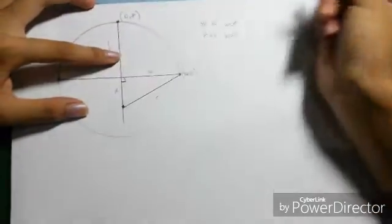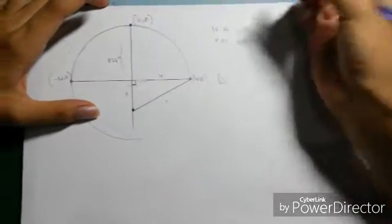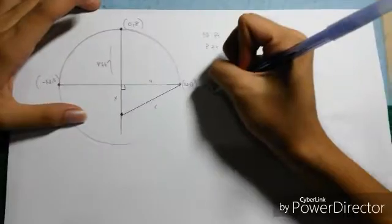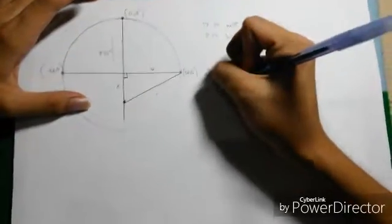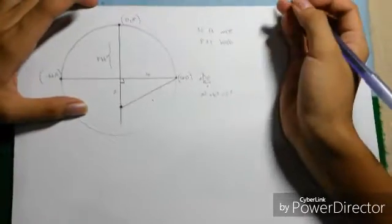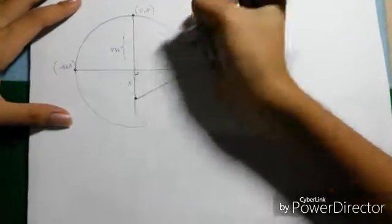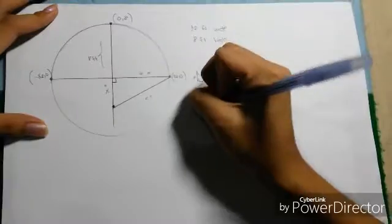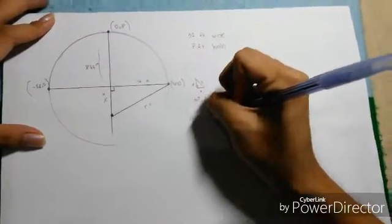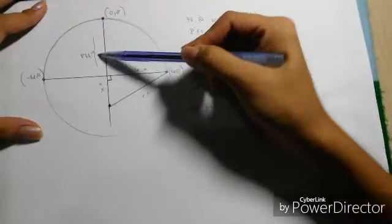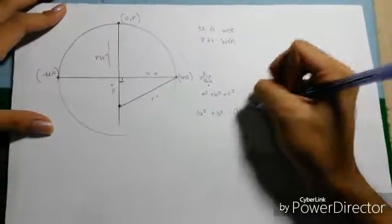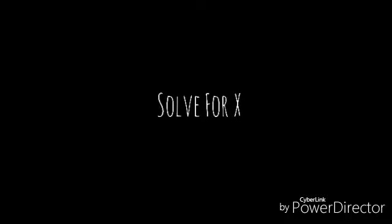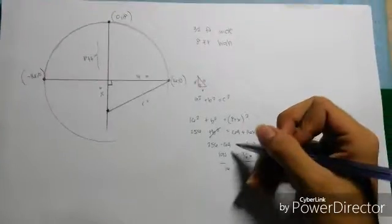The thing that I remember about right triangle is the Pythagorean theorem. A squared plus B squared is equals to C squared. This is A, this is B, and this is C. Let's find B. A is 16 squared plus B squared equals 8 plus X, that's our C, 8 plus X squared. X is equals to 12.